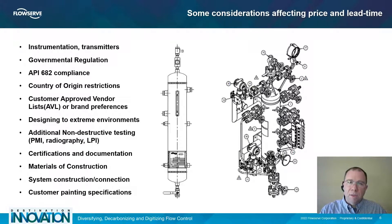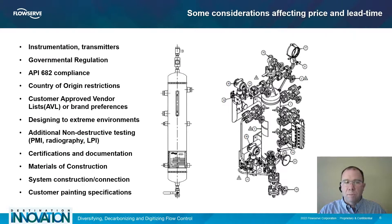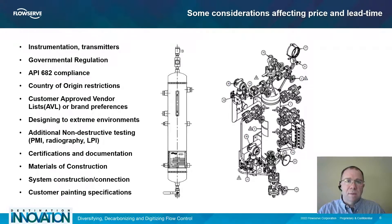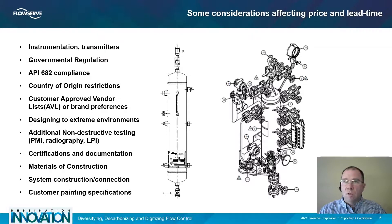Governmental regulation for the specific end user location is also very important to communicate. Failure to do so may lead to significant delays in shipment and rework costs. If you work in the oil and gas industry and require compliance to API 682, it's very important to communicate this upfront. API 682 compliance can add two or three times to the cost of the system and may add to delays and longer lead times due to component availability.